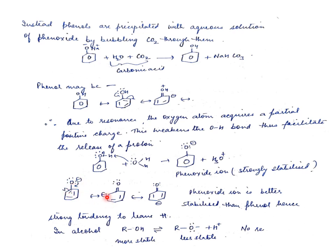When reacted with a base, H is abstracted to give phenoxide ion. Phenoxide ion formation is easy because it is also strongly resonance-stabilized — we can draw resonating structures where the negative charge is delocalized. Comparing these resonating structures with phenol's resonating structures, all of phenol's resonating structures have a partial positive charge on oxygen, whereas in phenoxide ion, the negative charge is on the electronegative atom. So phenoxide ion is better stabilized than phenol, giving it a strong tendency to release H⁺. By contrast, if alcohol releases H⁺, the alkoxide ion formed is less stable because resonance is not possible there.